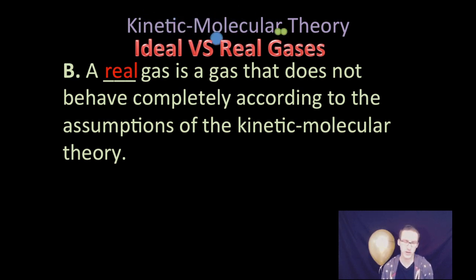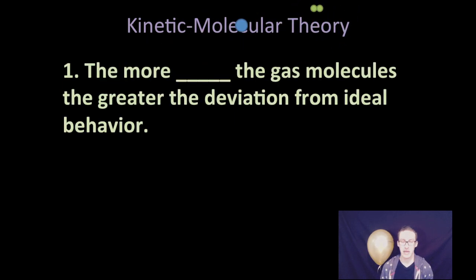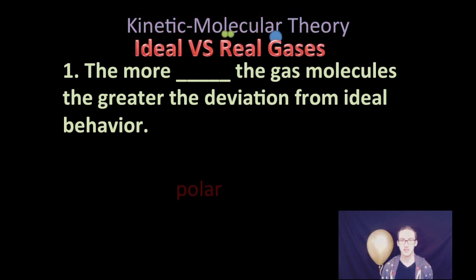But even though real gases deviate somewhat from the kinetic molecular theory, postulates go a long way to describing a lot of the behavior of gases that we observe. However, there are a couple of things to keep in mind in terms of trying to understand when gases will deviate from kinetic molecular theory. The first of which comes down to polarity. The more polar the gas molecules are, the greater the deviation from ideal behavior. Again, your polar molecules are going to have greater forces of attraction in between the gas molecules, allowing for more deviation from the perfect world of kinetic molecular theory.